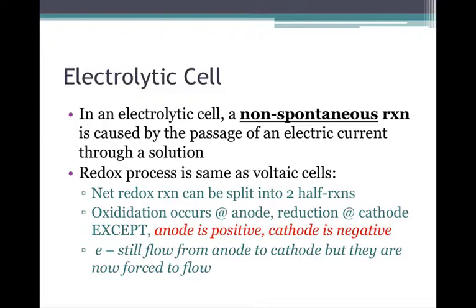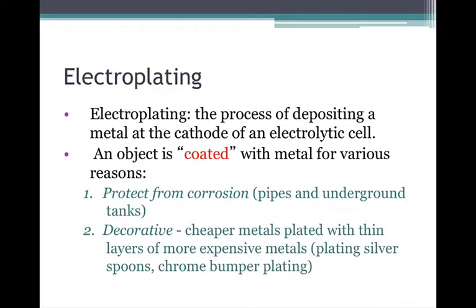The electrons will still flow from the anode to the cathode, but now they're forced to flow. Now, why would you do this? Why would you waste electrical energy in order to force some electrolytic cell to function?